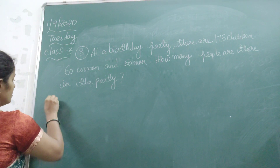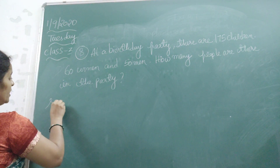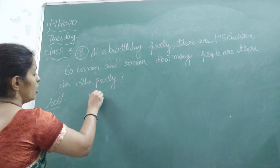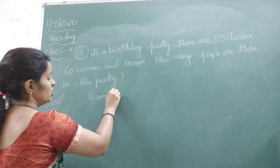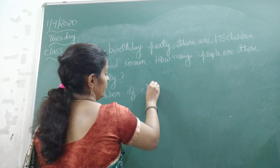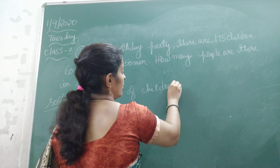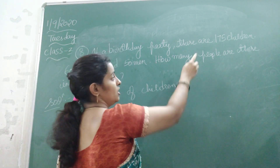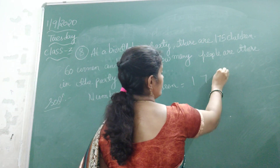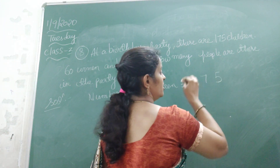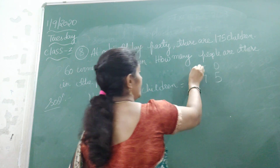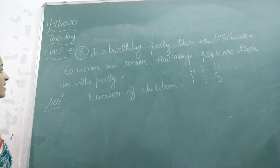Now we will write the solution. First we will write the number of children. So how many children are there in the party? That is 175 children — ones, tens, hundreds.